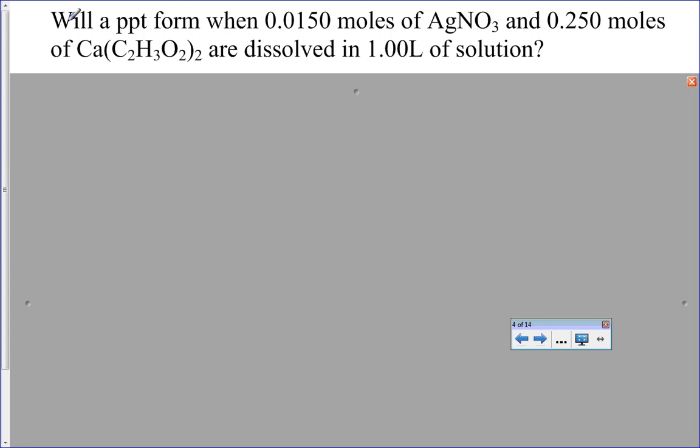We could do this in a lab and we would just be taking 0.0150 moles of silver nitrate and 0.250 moles of calcium acetate and dissolving them in one liter of solution.